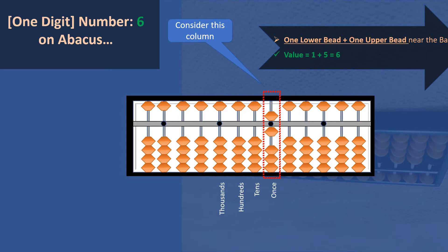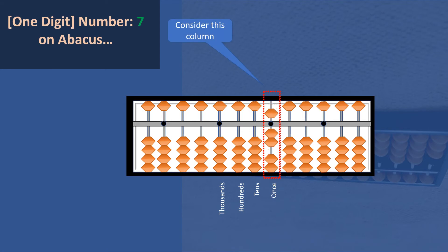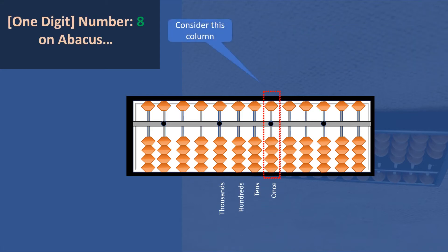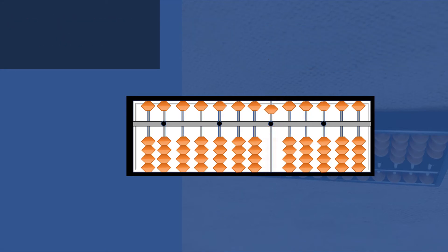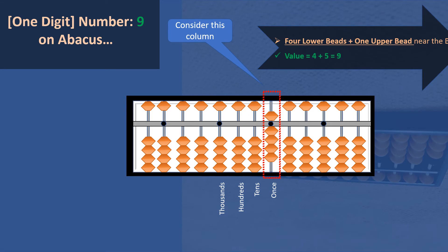How to write six: two beads have moved towards the bar — one upper bead and one lower bead — so the total value is five plus one, which is six. How to write seven: one upper bead and two lower beads have moved towards the bar, making a value of five plus two, which is seven. How to write eight: one upper bead and three lower beads move towards the bar, making the value eight. How to write nine: one upper bead and four lower beads move towards the bar, and the value is five plus four, which is nine.